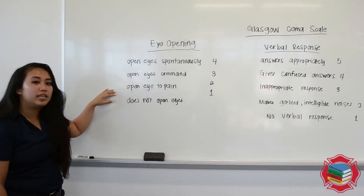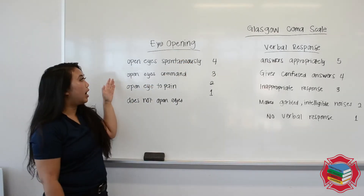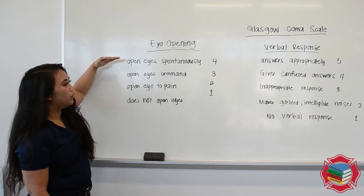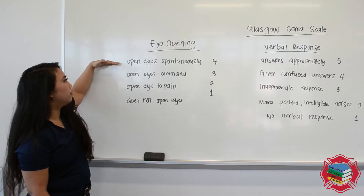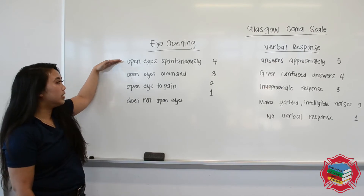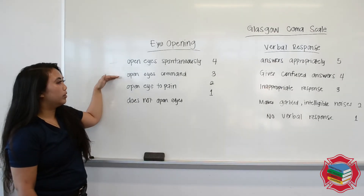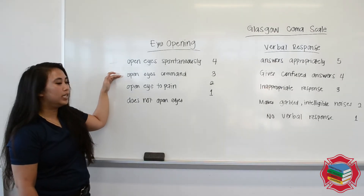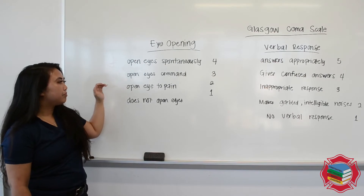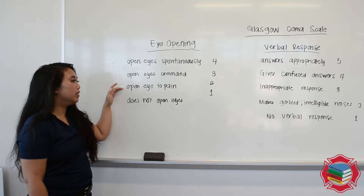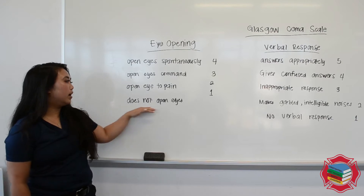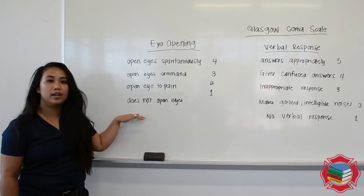First on the scale is going to be eye opening. The scale goes 4, 3, 2, 1. For 4, eyes are going to be open spontaneously. For 3, it's going to be eyes open on command. For 2, eyes open to painful stimulus. And then a 1, eyes do not open at all.